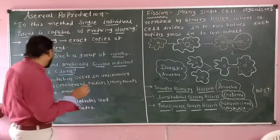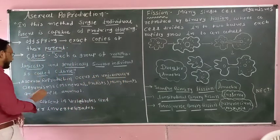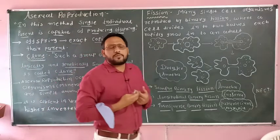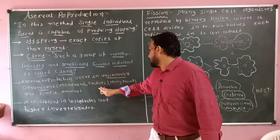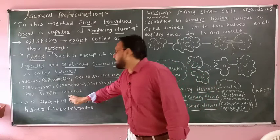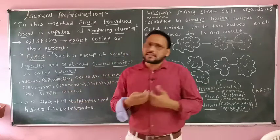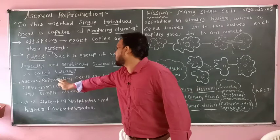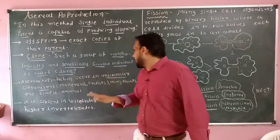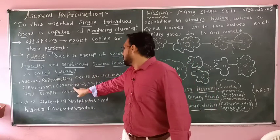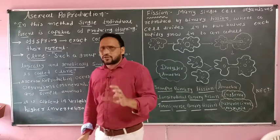Asexual reproduction occurs in unicellular organisms. Generally, asexual reproduction occurs in unicellular organisms, many plants, and simple animals. Many plants and simple animals undergo asexual reproduction.